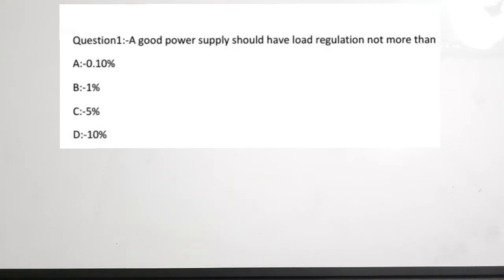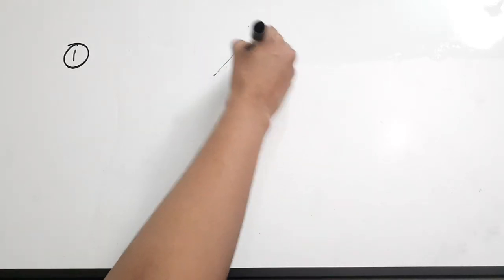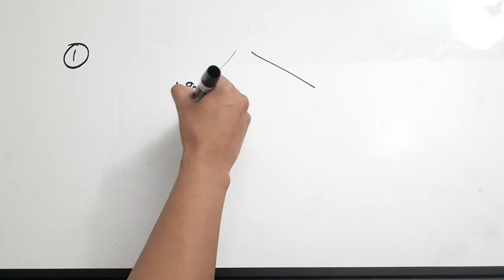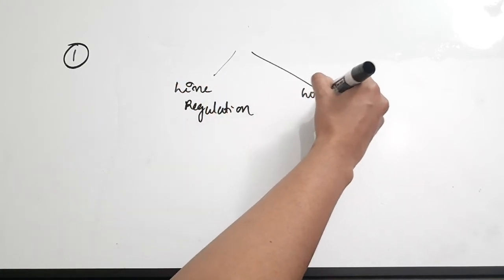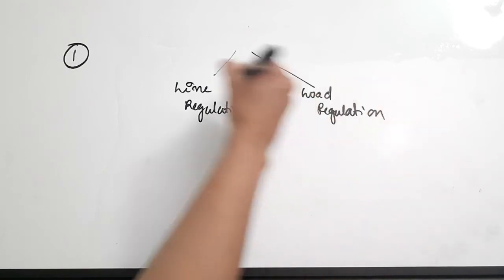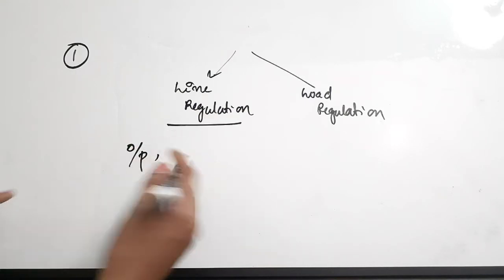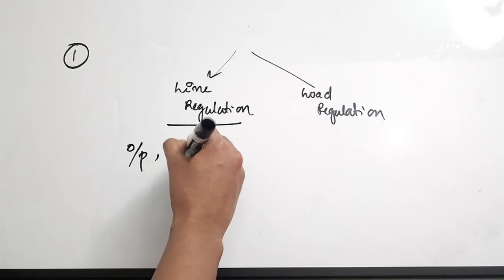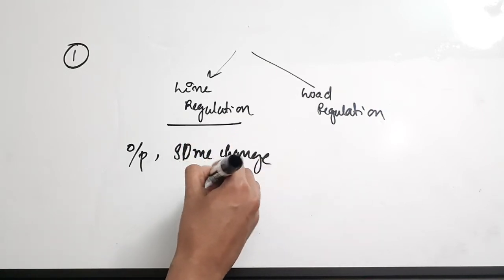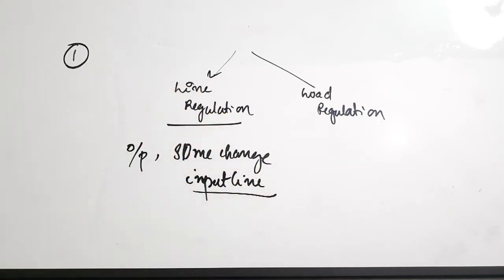There are two terms we need to know: line regulation and load regulation. Line regulation is the ability of the power supply to maintain its specified output voltage over changes in the input voltage. Even if there are changes in the input voltage, if it maintains a constant output voltage, that is called line regulation.